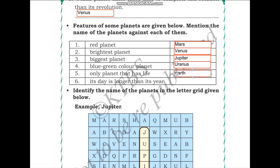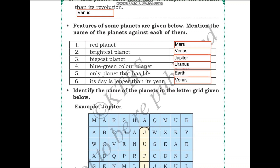Which is the planet where its day is longer than its year? Day longer than its year means the time it takes to complete one rotation is greater than the time it takes to complete one revolution. This is Venus. We have just learned that Venus takes more time to complete a rotation than it needs to complete a revolution.